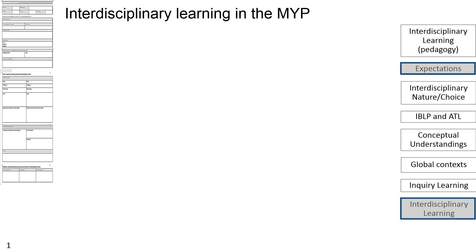In today's presentation, I'll be using the NYP Interdisciplinary Unit Planner to help explain the features of unit planning. You can see a thumbnail of the planner on the left with the relevant parts highlighted so that you can refer to your own copy and follow closely. On the right, you will see some key elements of the NYP curriculum framework and program model, such as the IB learner profile, ATL skills, global context, and inquiry learning, that are so important to consider during the planning of the written, taught and assessed curriculum.